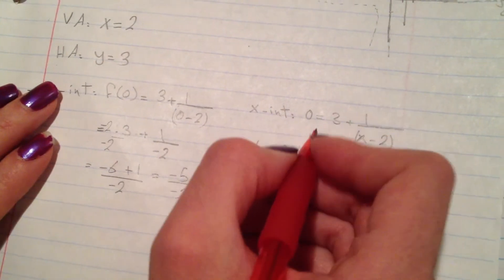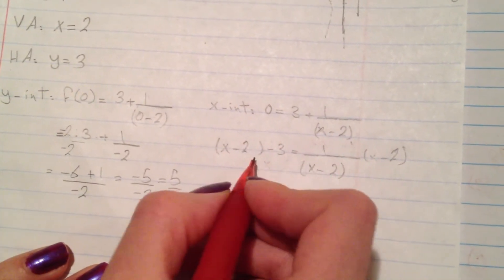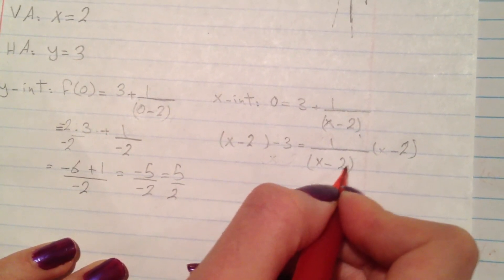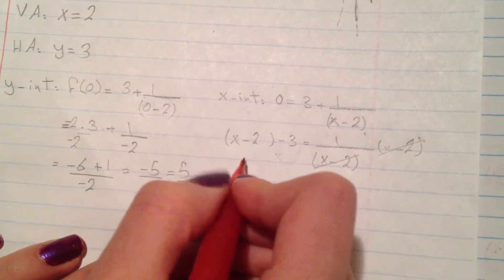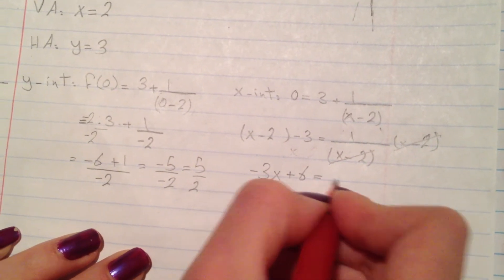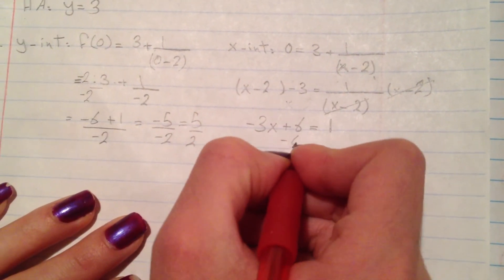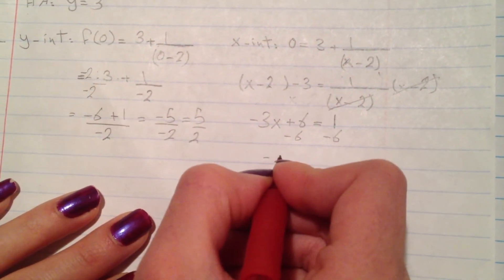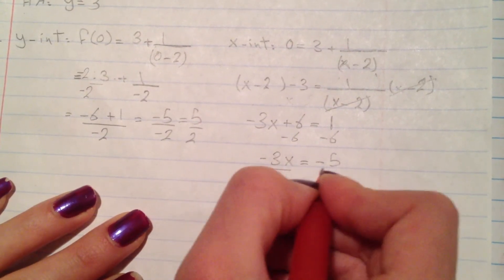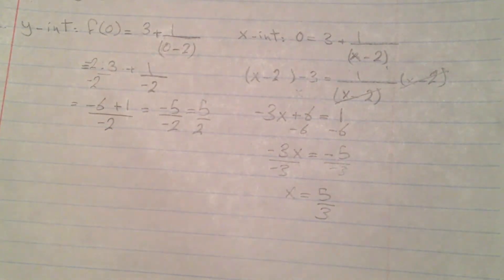For the x-intercept: 0 = 3 + 1/(x-2). Subtracting 3 and multiplying both sides by (x-2): -3(x-2) = 1, which gives -3x + 6 = 1. Subtracting 6 from both sides: -3x = -5. Dividing by -3: x = 5/3. And that's it.